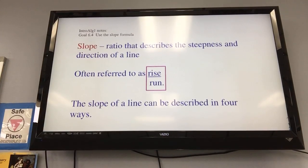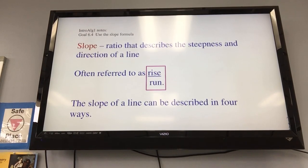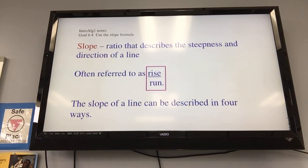All right, so in 6-4, we are talking about the slope of a line. Slope is simply a ratio that describes the steepness and direction of a line. Slope is often referred to as rise over run. Rise being the up and down movement, and run being the left and right movement.